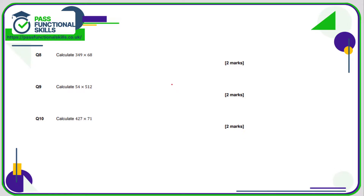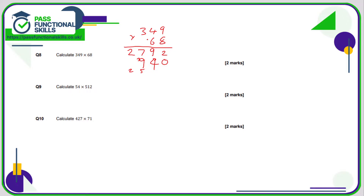Question 8: 349 times 68 — some fairly unpleasant times tables here so we need to be very careful. 8 nines are 72, 2 carry 7; 8 fours are 32 plus 7 is 39, 9 carry 3; 8 threes are 24 plus 3 is 27. Put in a 0 for the 6 of 60: 6 nines are 54, 4 carry 5; 6 fours are 24 plus 5 is 29, carry 2; 6 threes are 18 plus 2 is 20. Adding together, the answer is 23,732.